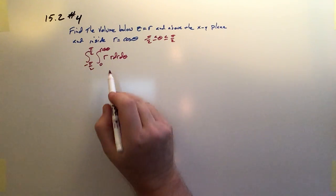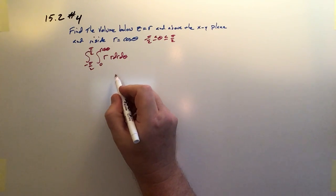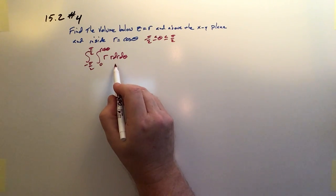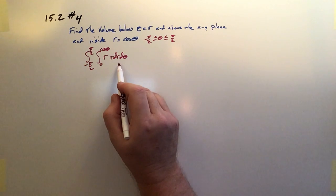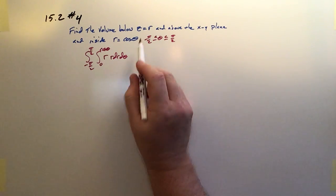Remember, r d theta is used to take into account all of the outer arc lengths. That's one dimension of these little base pieces, and dr is the other one. So r times dr d theta just simply satisfies the dimensions of the pieces within the base, and this is the height because that's the function z.